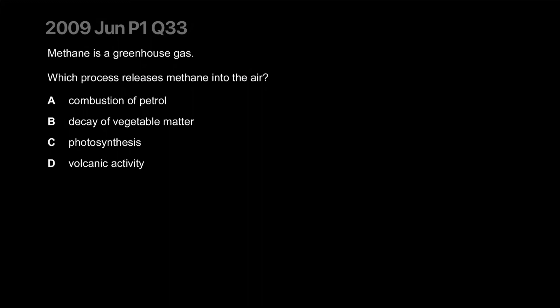Methane is a greenhouse gas. Which process releases methane into the air? Combustion of petrol, decay of vegetable matter, photosynthesis, volcanic activity. Decay of vegetable matter produces methane and can release it into the atmosphere.